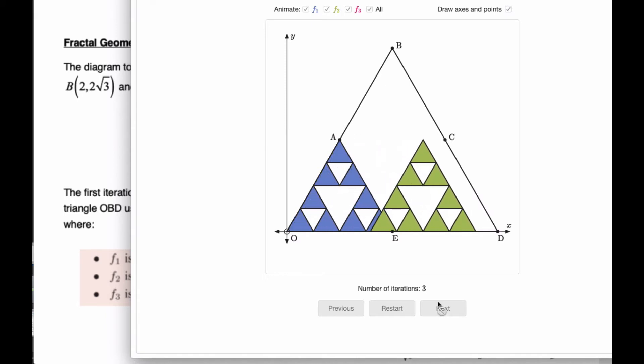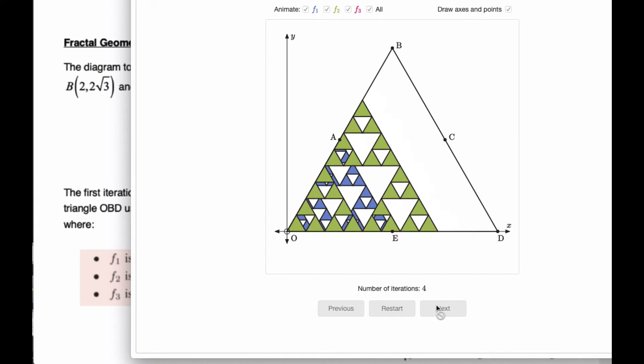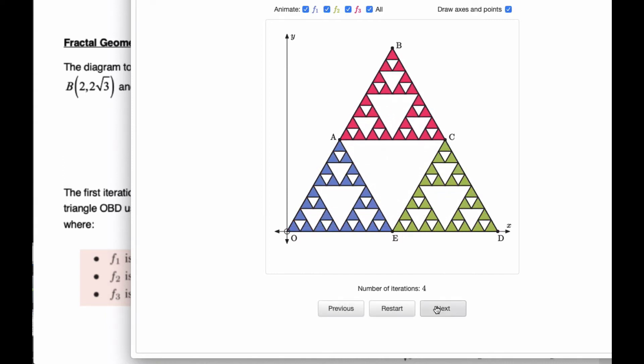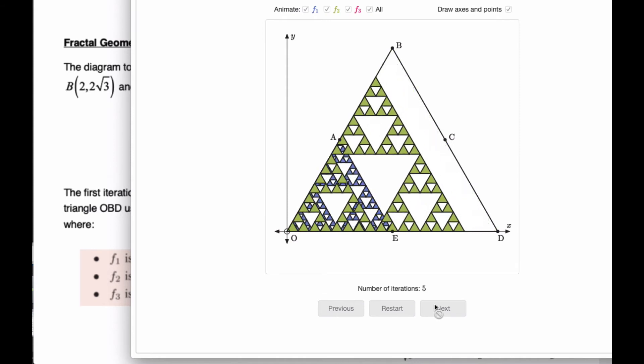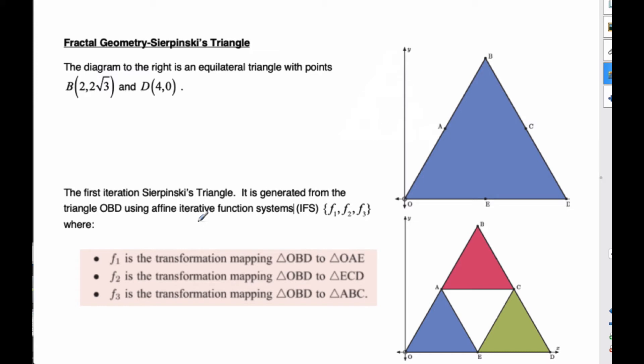Again, it starts that base triangle, and each iteration, the next one's going to start with this particular triangle, shrink it down, shift it, shrinks it down and shifts it. The last one takes it again, shrinks it down, and these fractals can go on infinitely. So that's the idea of a fractal—it continues the pattern over and over again through this iterative process.